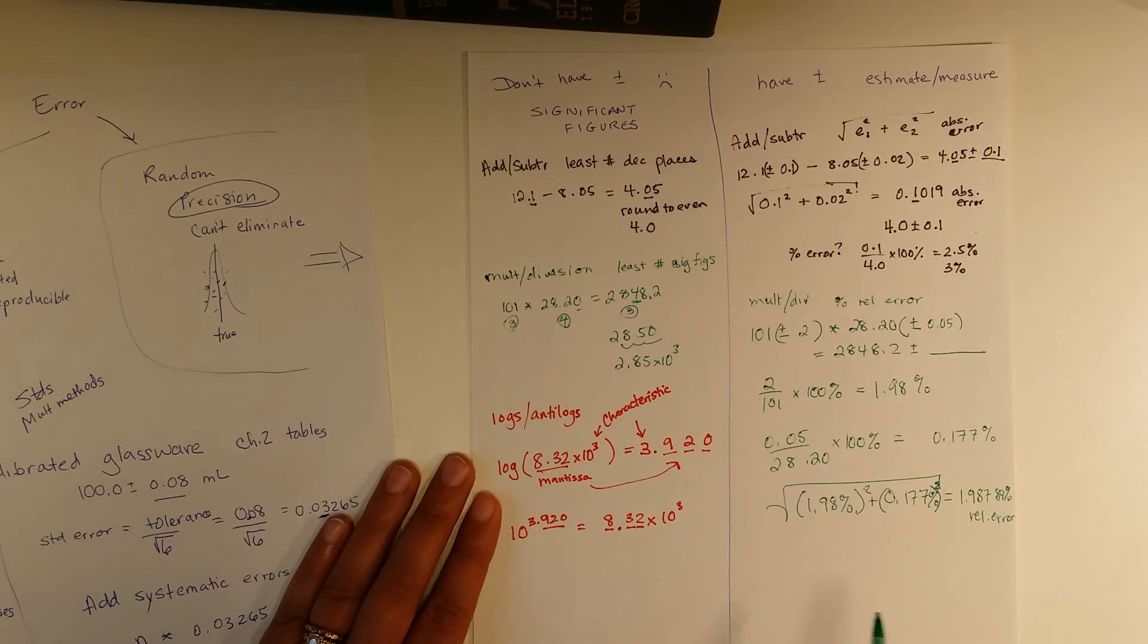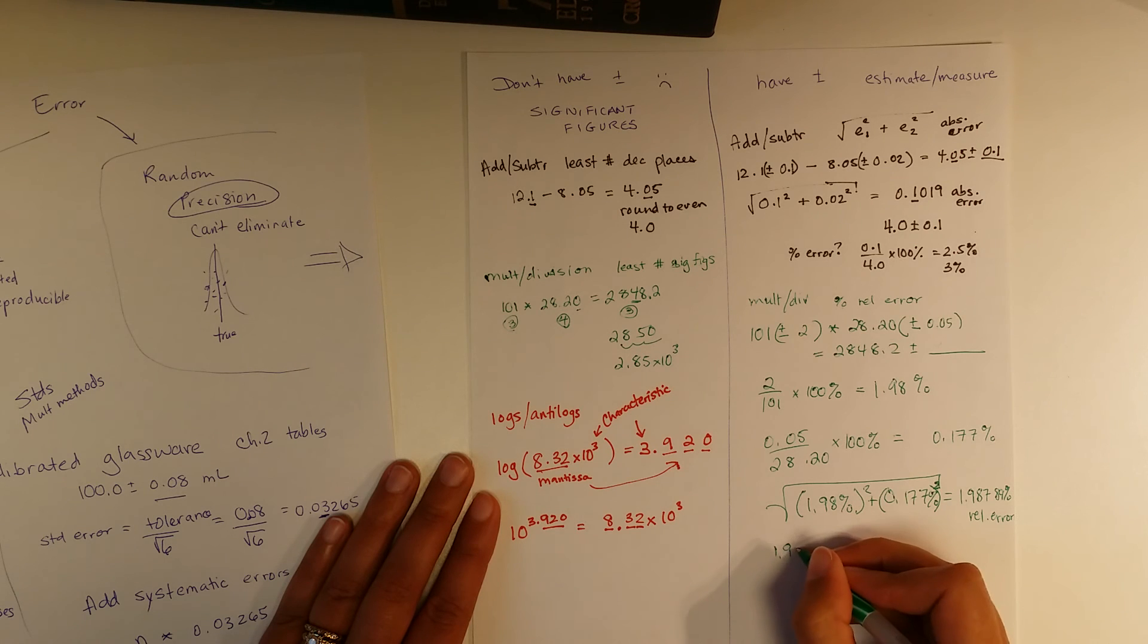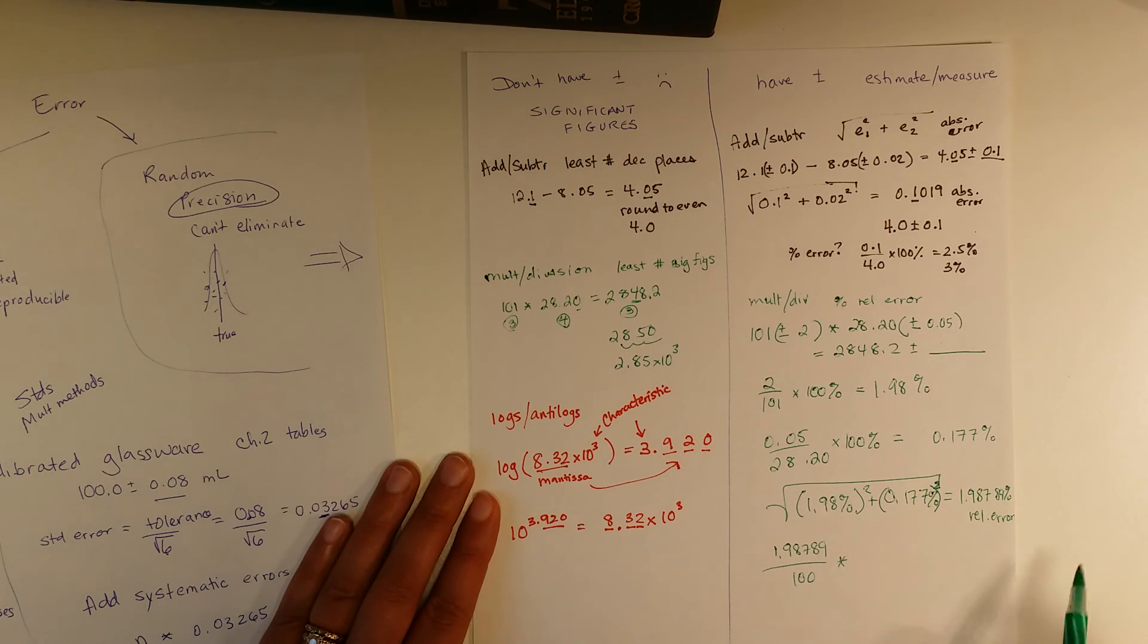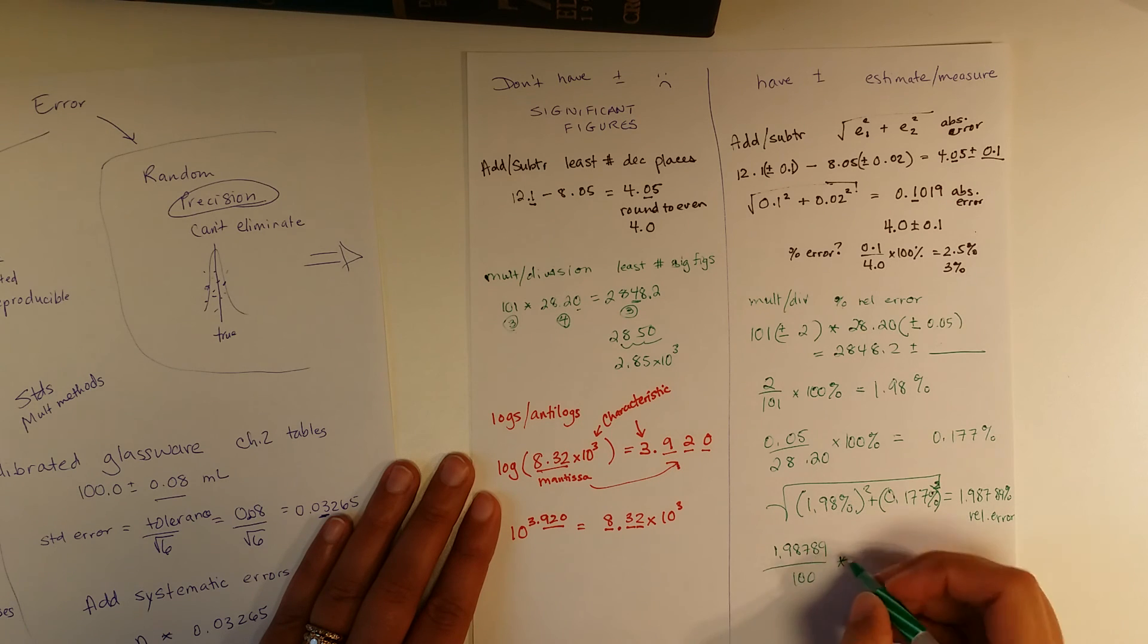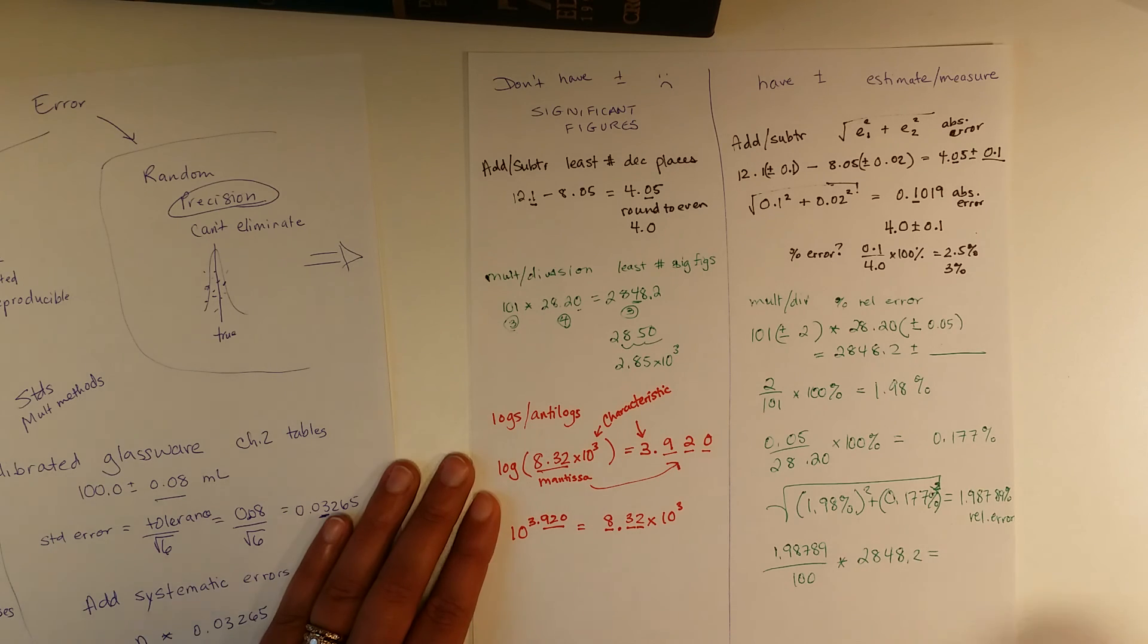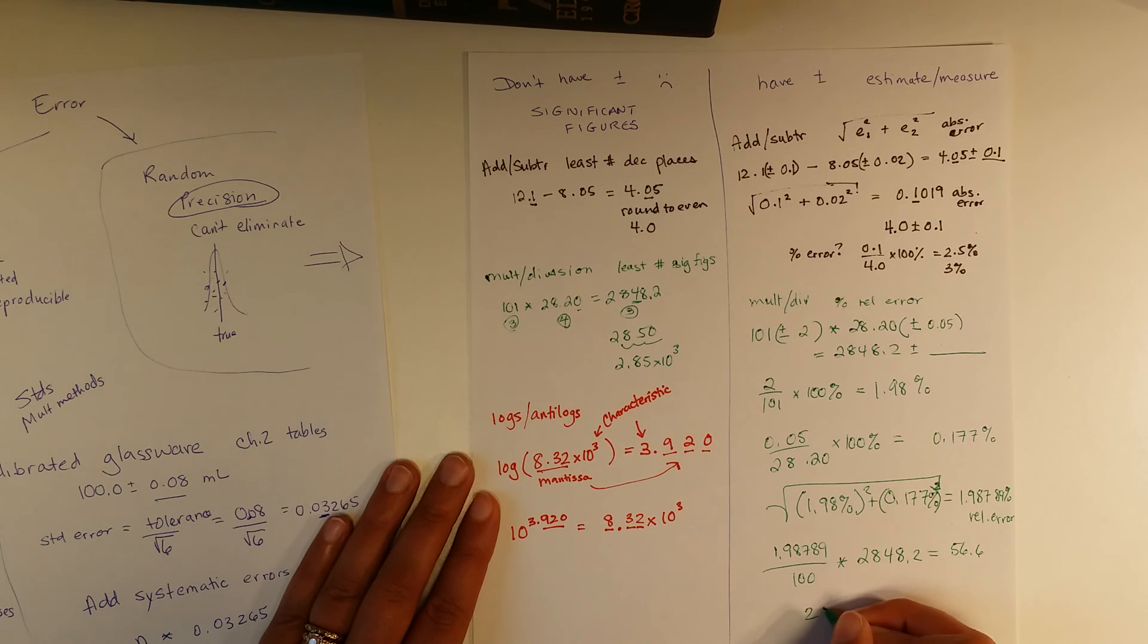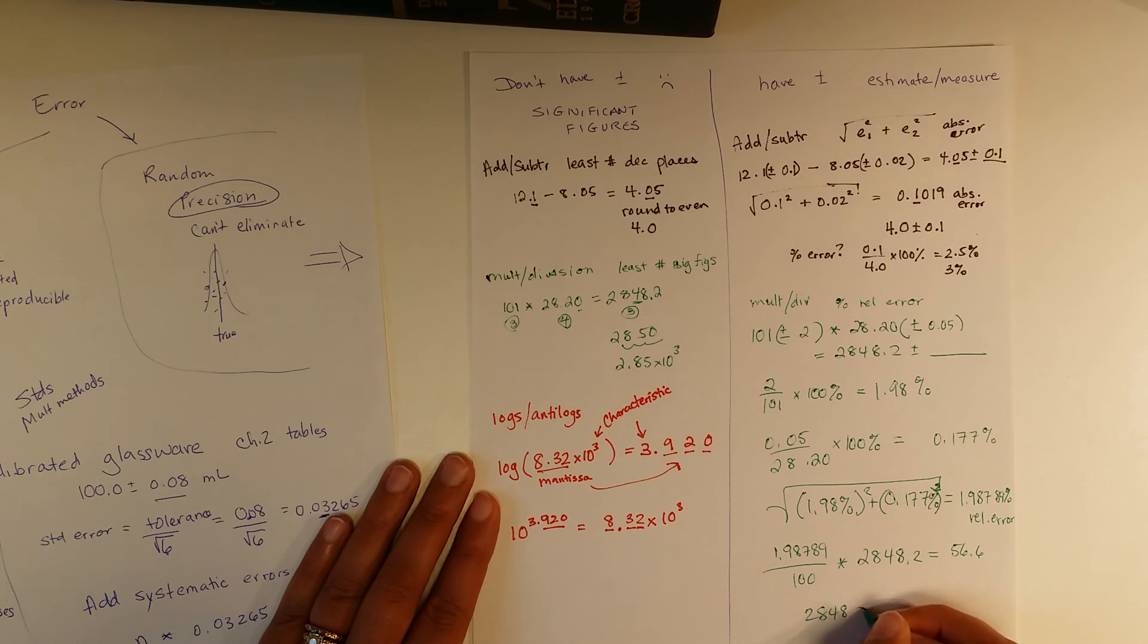I may want to get that back to absolute error, so I can put in the same number here. And so you just convert that back. Because it's a percent, you need to divide by 100. And then we're saying, what is this? Okay, it's 2848.2 plus or minus 1.9% of that. So it's 1.98% of the 2848.2. This comes out to 56.6. And so now we know it's 2848.2 plus or minus 56.6.